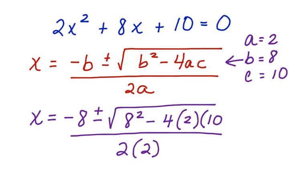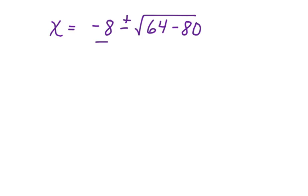Now we're going to multiply that through. And we get x is equal to negative 8 plus or minus the square root of 64 minus 80 divided by 4.